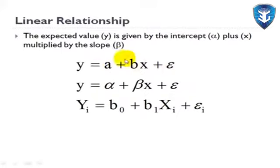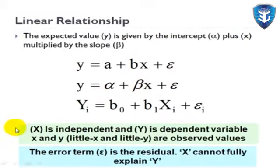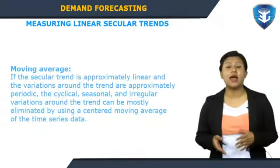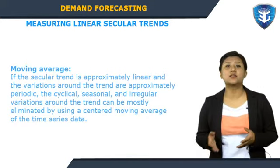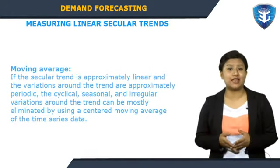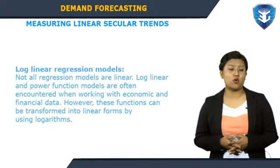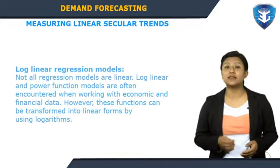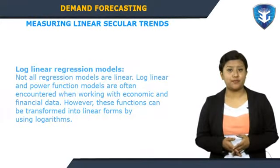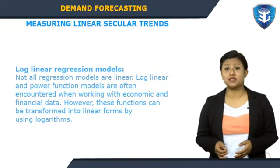In summary, x is the independent variable, y is the dependent variable, and the error term is the residual. If the secular trend is approximately linear and variations around the trend are approximately periodic, cyclical, seasonal, and irregular variations can be mostly eliminated by using a centered moving average. Log-linear and power function models are often encountered when working with economic and financial data, but these functions can be transformed into linear forms by using logarithms.